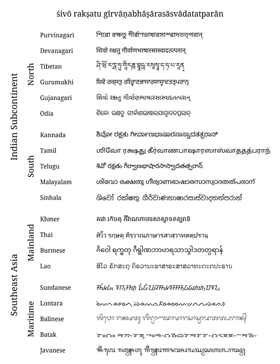Vowels are presented in their independent form on the left of each column, and in their corresponding dependent form combined with the consonant K on the right. A glyph for 'ka' is an independent consonant letter itself without any vowel sign, where the vowel 'a' is inherent.